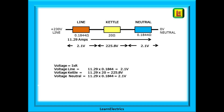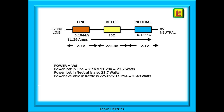Calculating voltage drops: the line is 11.29 amps times 0.1844 ohms = 2.1 volts; the neutral is also 2.1 volts. The voltage across the kettle has dropped to 225.8 volts. The total voltage drop is 4.2 volts — well below the permitted 11.5 volts in the regulations. The power in the line conductor is 2.1 volts times 11.29 amps = 23.7 watts; the same in the neutral — a total of 47.4 watts lost into the wall. The kettle receives 225.8 volts times 11.29 amps = 2,549 watts.